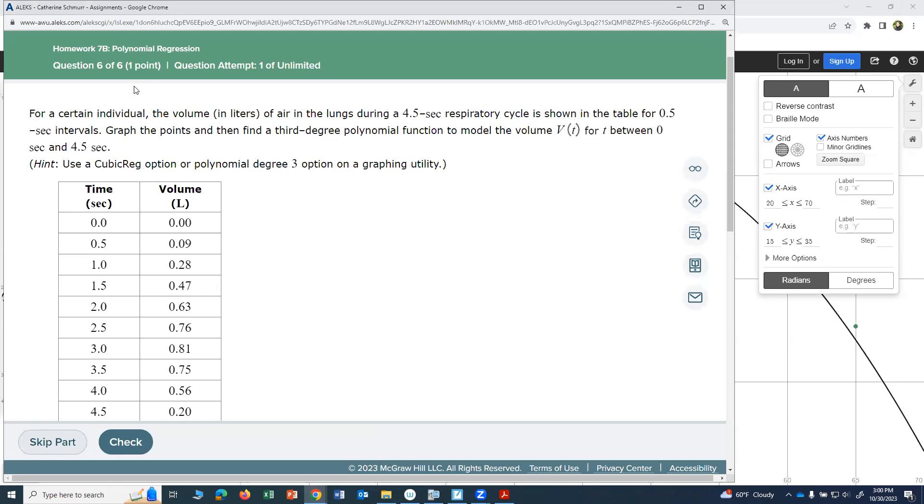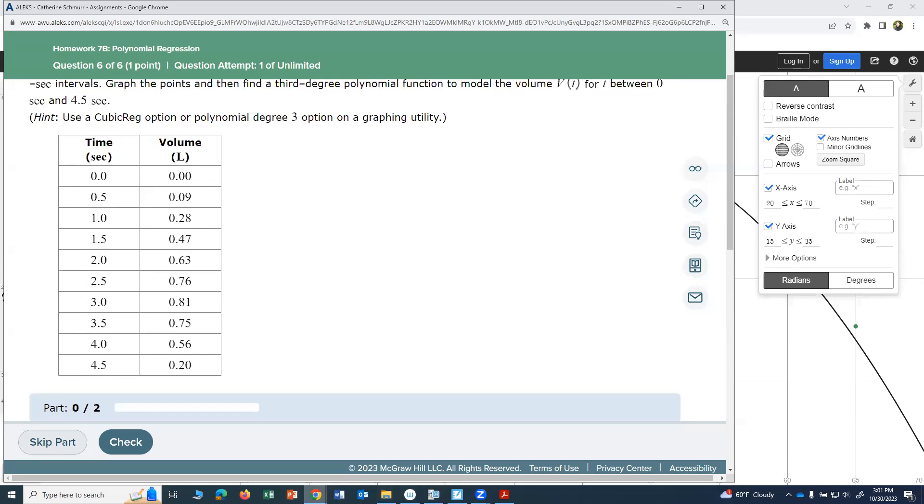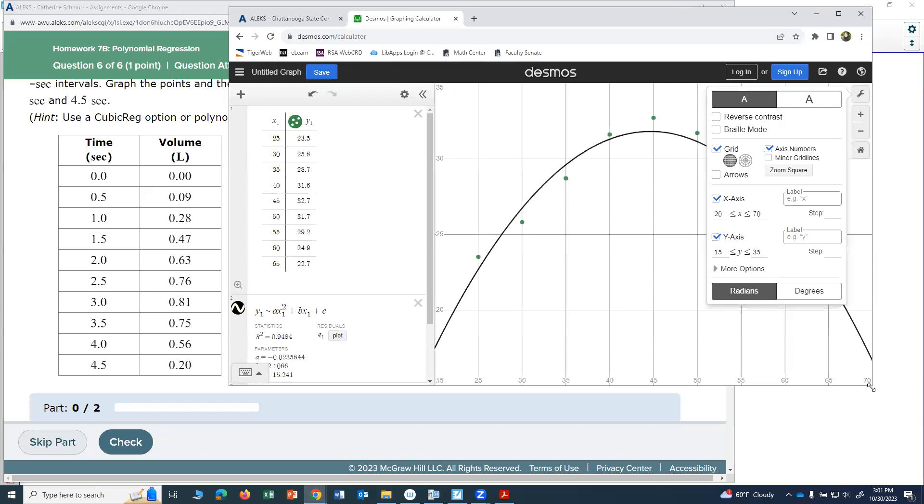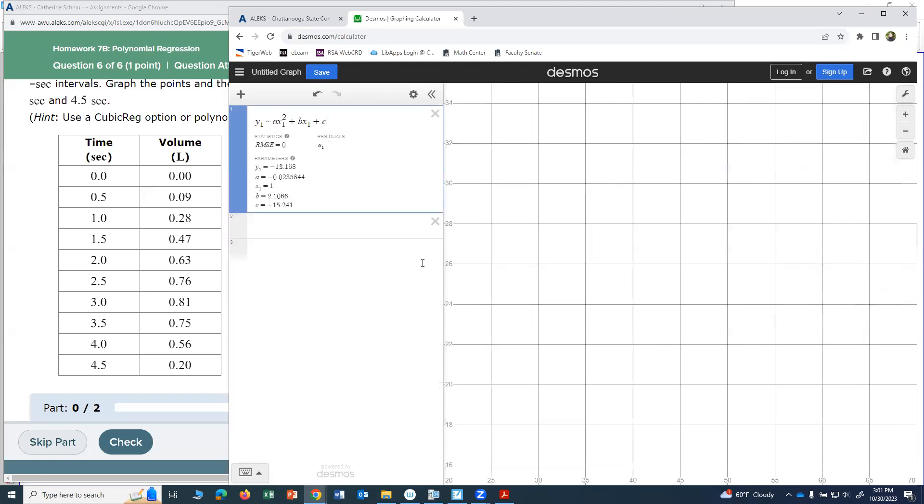So let's look over here. For a certain individual, the volume in liters of air in the lungs during a 4.5 second respiratory cycle is shown in the table for 0.5 second intervals. Graph the points and then find a third degree polynomial function. Third degree tells me it's going to be cubic. Now we're doing Desmos, so let me go ahead and grab Desmos here. I'm going to try to make it so I can see my data and Desmos at the same time.